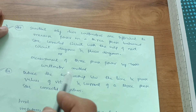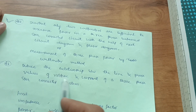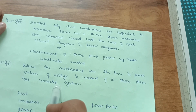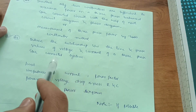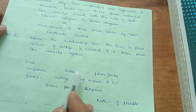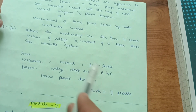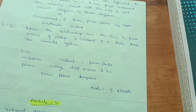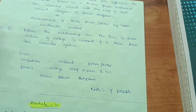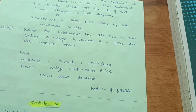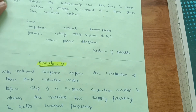Also deduce the relationship between line and phase values of voltage and current in a three-phase star-connected system. Some problems may be given on series circuits where you find impedance, current, power factor, power, voltage drop across components, and draw the phasor diagram. As a backlog student, it is very difficult to cover all portions, so I have selected important questions — but be aware the syllabus is very vast in this subject.